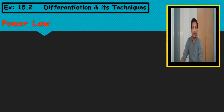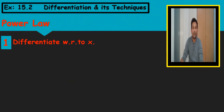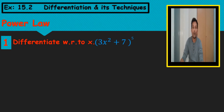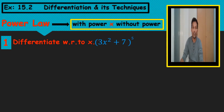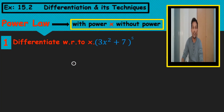Let me give an example: differentiate with respect to x the equation (3x squared plus 7) whole power 5. This is where we have to use the power law. For the power law, we always differentiate with the power multiplied by the expression without the power — this is a very important thing to understand.